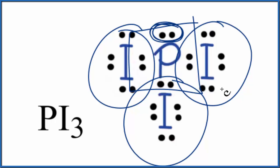So we have our Lewis structure, and you can imagine each iodine and the lone pair all pushing away from each other, and that'll give us the molecular geometry for PI3.